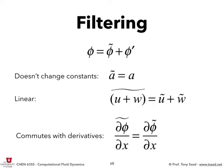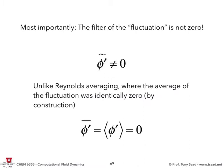When we looked at filtering, I defined the filtering operation, and gave you some properties: the filter of a constant is still a constant, it's linear, the filter of a sum is the sum of filters, and it commutes with differentiation. But one key property was that the filter of the subgrid quantities is not equal to zero. This breaks the sieve analogy a little — it's equivalent to taking a different-sized sieve and running the subgrid quantities through it.